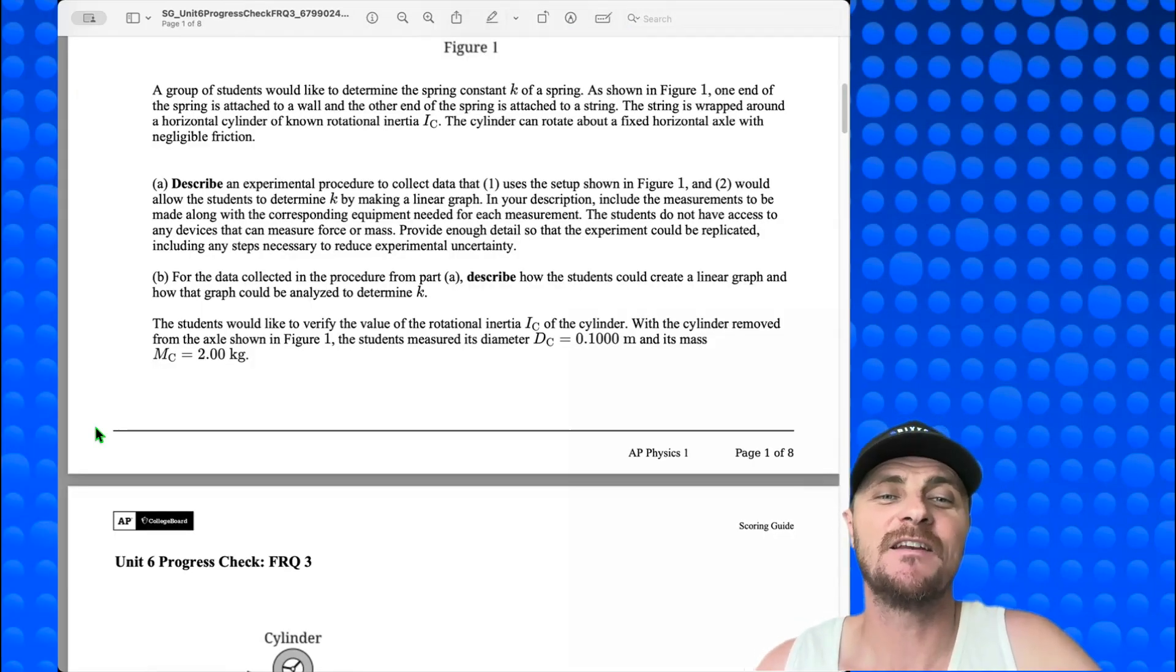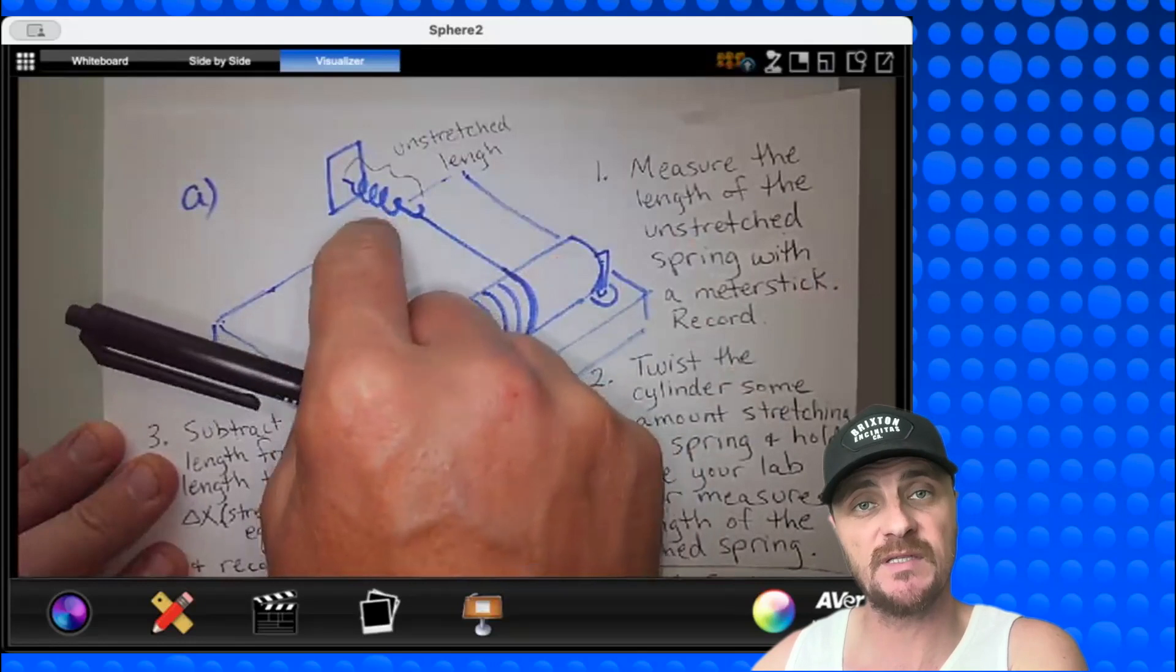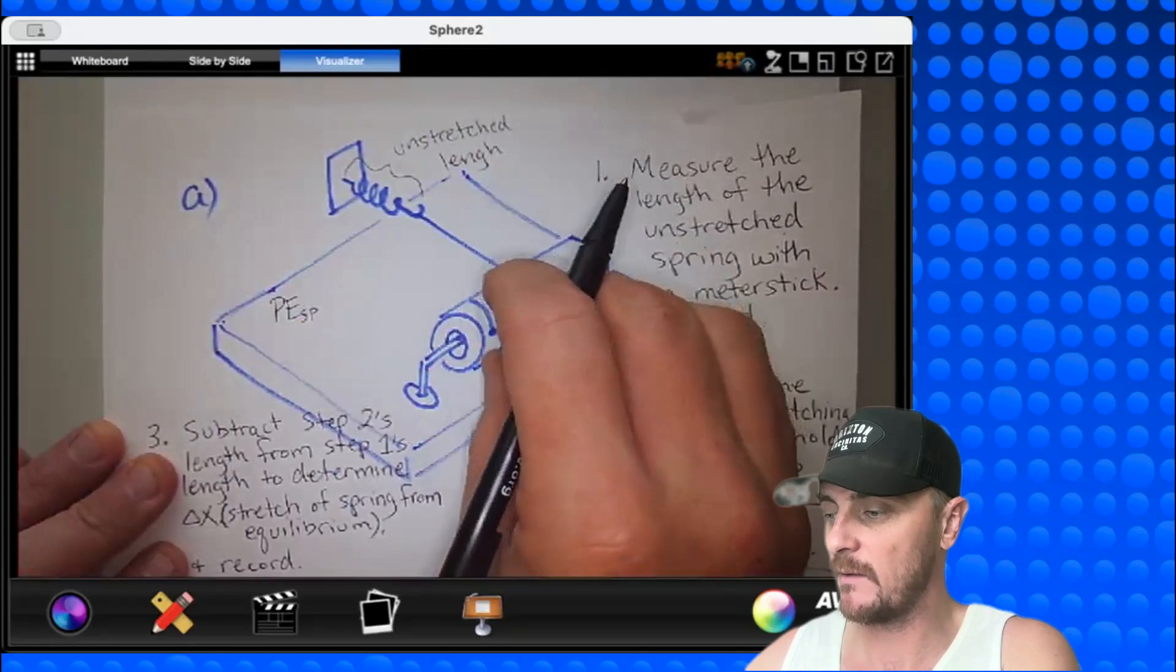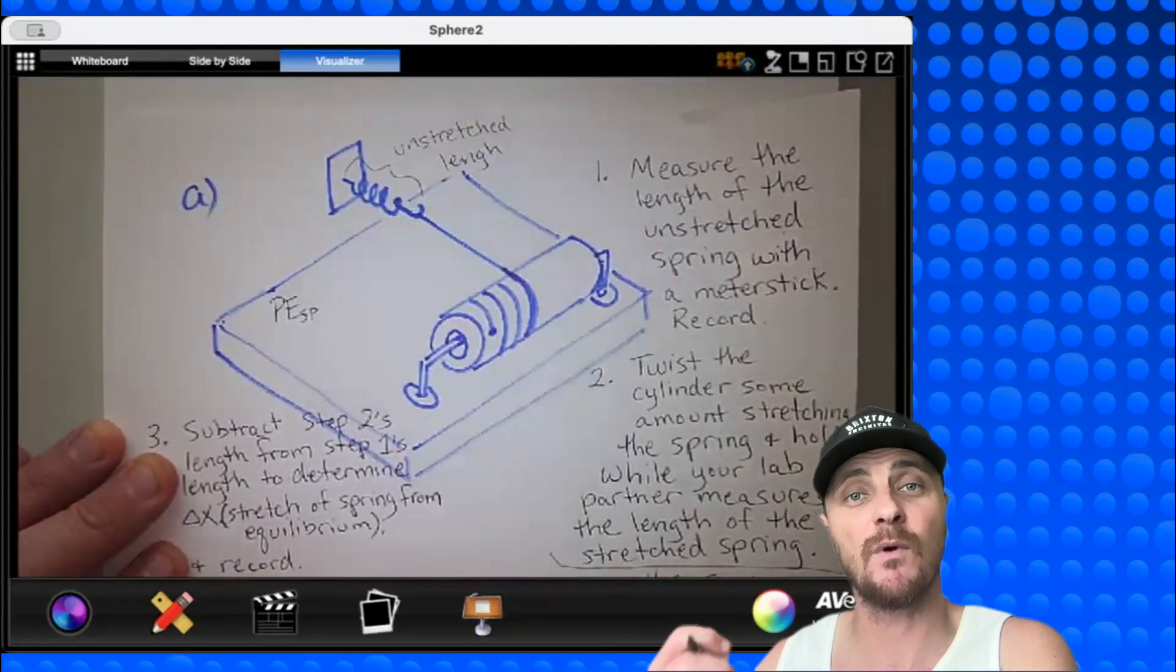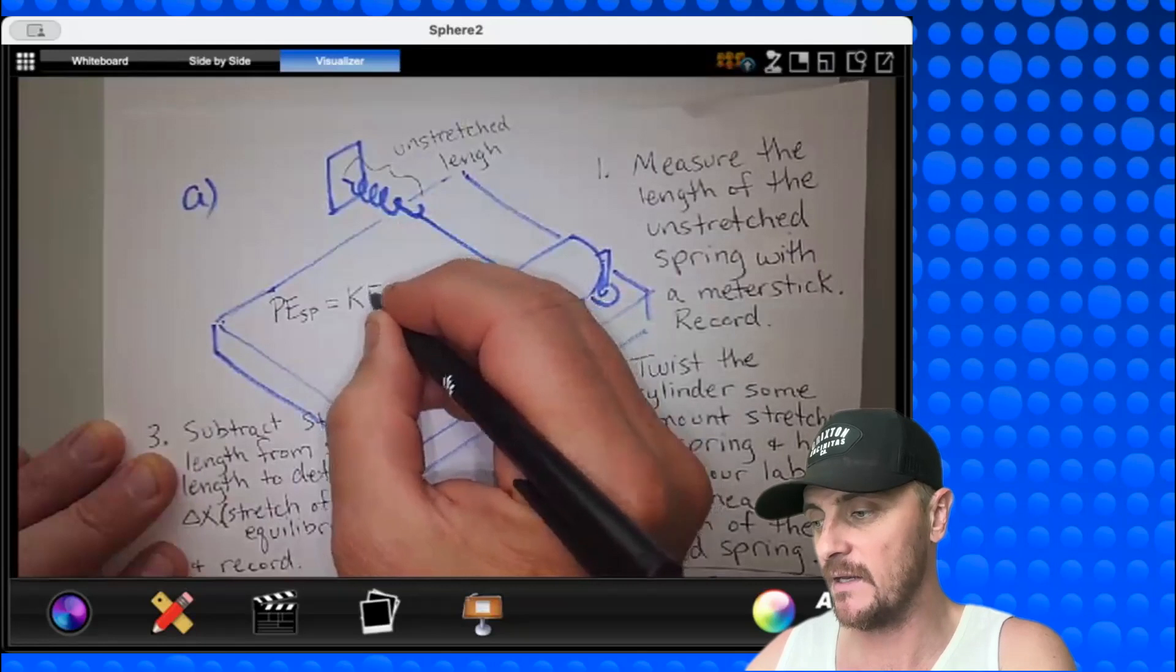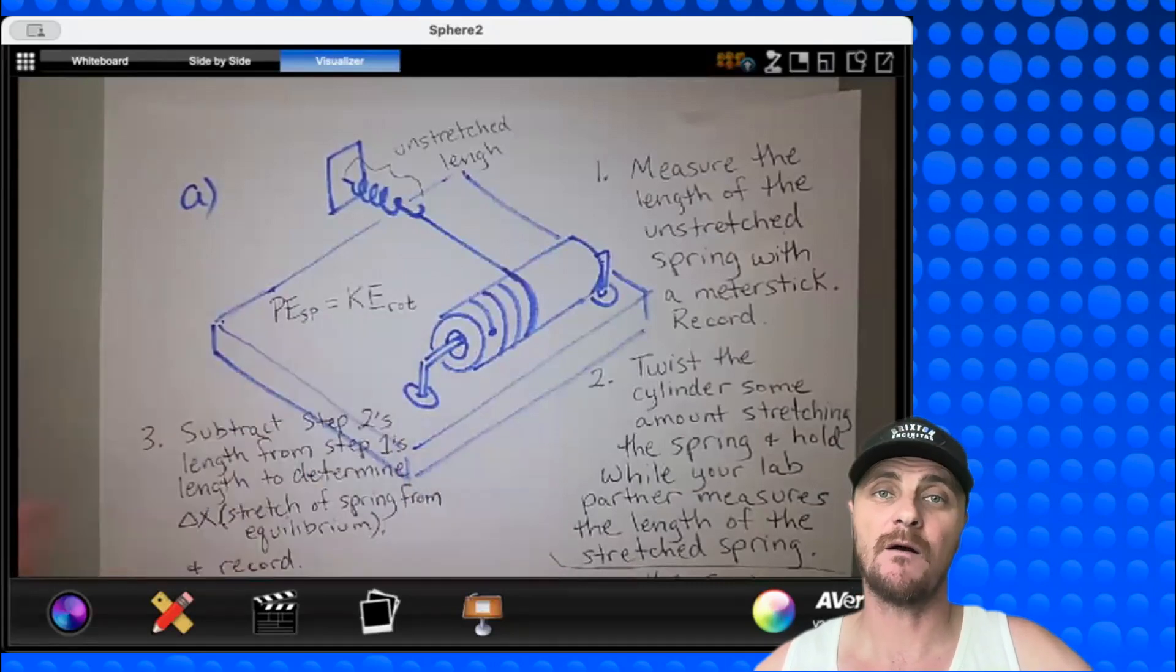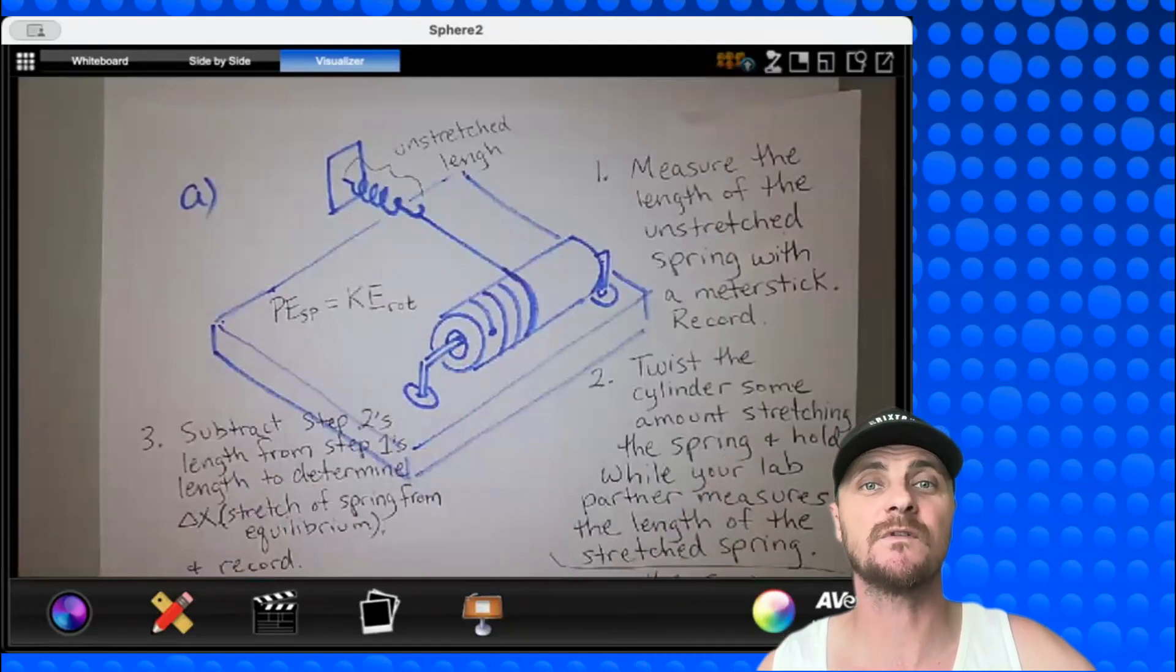Part B. From the data collected in the procedure from part A, describe how the students could create a linear graph and how that graph could be analyzed to determine K. So let's quickly brainstorm. When I twist the cylinder, what kind of energy do I have? I have spring potential energy. So I have PE elastic, or I could call it PE SP. And when I release this, it starts speeding up until the spring is not stretched anymore. And at that point, I have rotational kinetic energy. So this initial spring potential energy will be equal to my kinetic rotational energy. And there's my idea for part B. From this equation, I'll figure out what I need to plot on my x-axis and what I need to plot on my y-axis in order to get a slope that is equal to the spring constant.